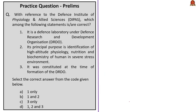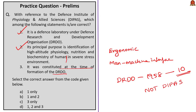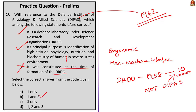The final question is about the Defense Institute of Physiology and Allied Sciences (DIPAS). Statement one says it is a defense laboratory under DRDO — correct. Statement two says its principal purpose is identification of high-altitude physiology, nutrition, and biochemistry of humans in severe stress environments — correct; it also provides ergonomic assessment of workstations and man-machine interface. Statement three says it was constituted at the time of DRDO's formation in 1958 — incorrect; DIPAS was formed four years later in 1962. The correct answer is option B: one and two only.